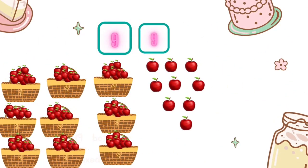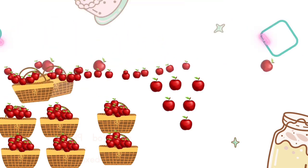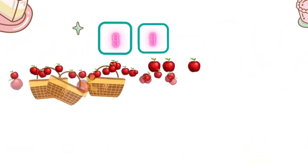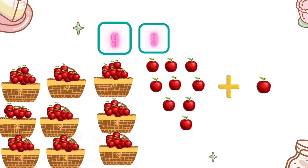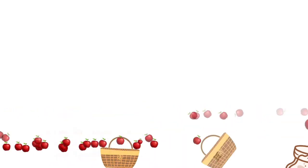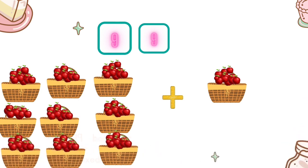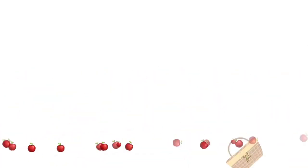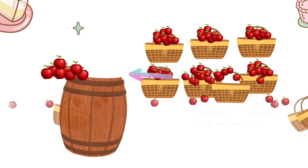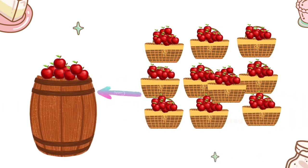Using only our 10 digits and these two number places, we can count all the way from 0 to 99. At 99, both number places are maxed out with the highest digits, and we wouldn't be able to count any higher unless we get another number place. Once we pick one more apple to reach 100, we can make a group of 100 and use a new number place to count how many groups of 100 apples we have picked — reusing the same 10 digits again.